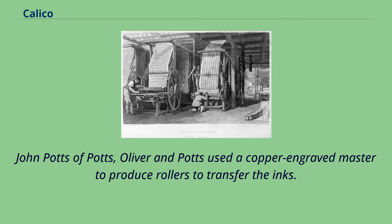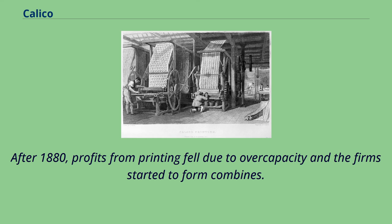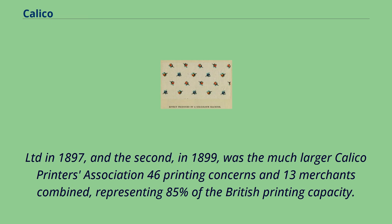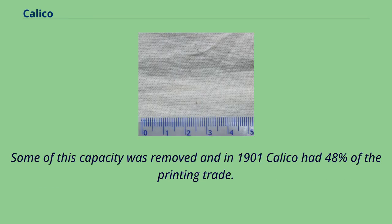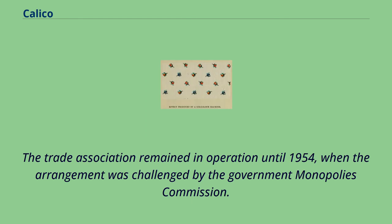John Potts of Potts, Oliver and Potts used a copper-engraved master to produce rollers to transfer the inks. After 1888, block printing was only used for short-run specialized jobs. After 1880, profits from printing fell due to overcapacity and firms started to form combines. Three Scottish firms formed the United Turkey Red Company Limited in 1897, and in 1899 the much larger Calico Printers Association — 46 printing concerns and 13 merchants combined — represented 85% of the British printing capacity. In 1901 Calico had 48% of the printing trade. In 1916, they and other printers formed a trade association which set minimum prices, remaining in operation until 1954 when challenged by the Government Monopolies Commission.